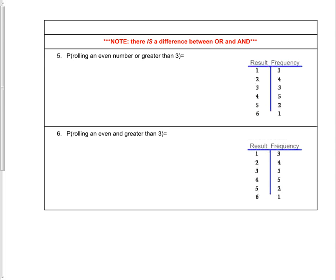Next, let's look at situations with OR and AND — this is key. What's the probability of rolling an even number or a number that's greater than 3? When you have OR, there are two conditions that could be met, and they don't have to be met at the same time — either one of the two conditions can be met. We again have 18 total trials. Looking at even numbers, we have frequencies of 4 plus 5 plus 1, giving us 10 even numbers rolled.